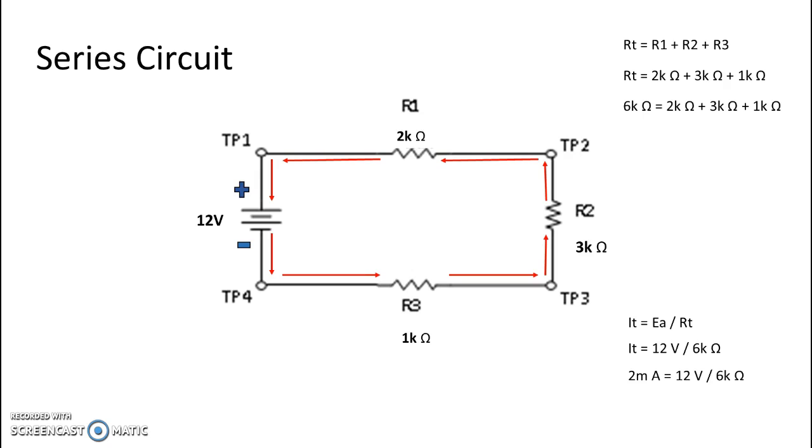Finally, we calculate the individual component's voltage drops. We start with R1 and use Ohm's law again. To get the voltage, we take the resistance of the individual component multiplied by total current. Since there is only one path for current, all of them will have the same current. So if I take my 2k ohms resistance for R1 and multiply it by total current of 2 milliamps, I get 4 volts. So the voltage drop of R1 is 4 volts.